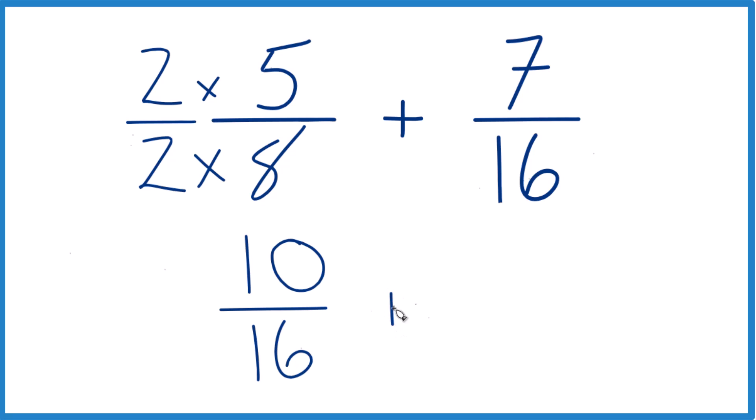Now we add our 7 sixteenths here. And we can just take, because we have the common denominator, we can add the numerators. 10 plus 7, that's 17. And then bring the 16 across, and we have 17 sixteenths.